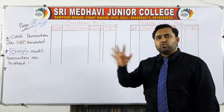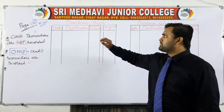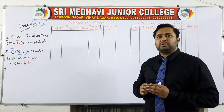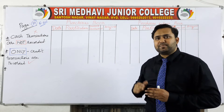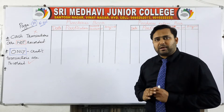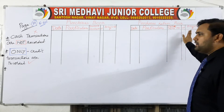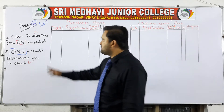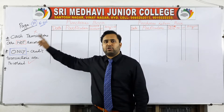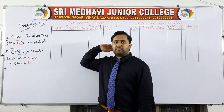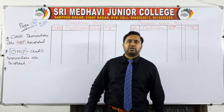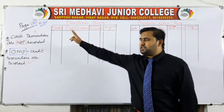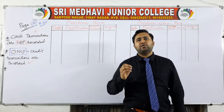For example, goods purchased from Jamal goes into the purchase book. Goods returned to Kamal — since you are returning goods to the party — that goes into the purchase returns book. Remember these two important points: cash transactions are not going to be recorded in either the purchase book or purchase returns book. Only credit transactions are recorded in both books.